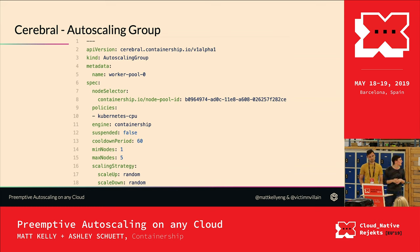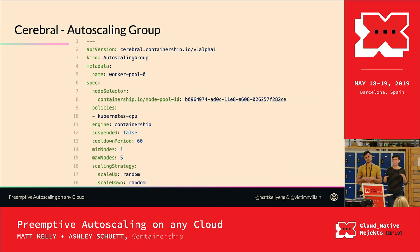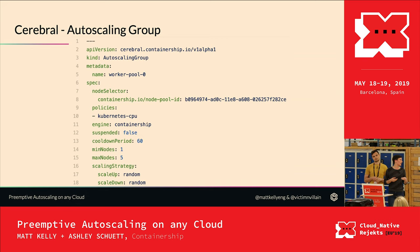Looking at an autoscaling group CR in Cerebral, you can specify a node selector, select multiple policies for that node selector, and the engine it should talk to. There's a suspended field to turn autoscaling on and off. The cool-down period ensures there's time for a node to come up and join the cluster before another autoscaling decision is made — avoiding thrashing. You also specify minimum and maximum node counts, and the scaling strategy.